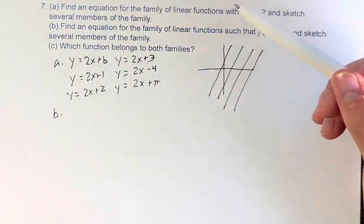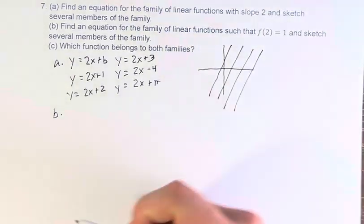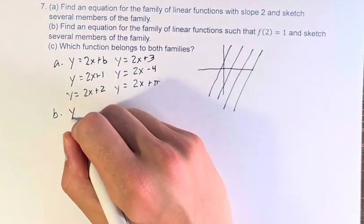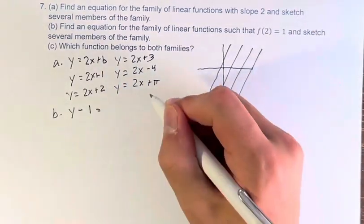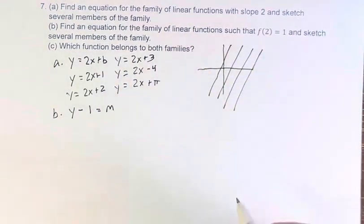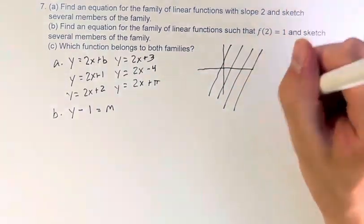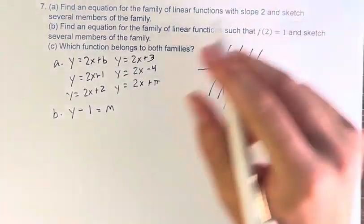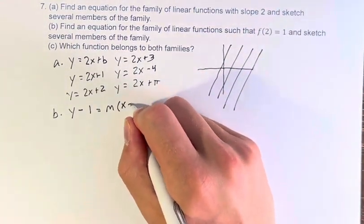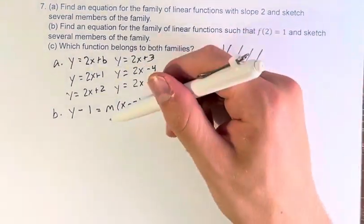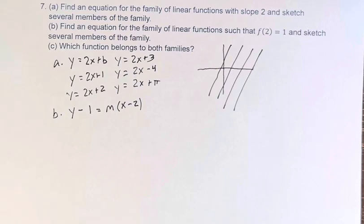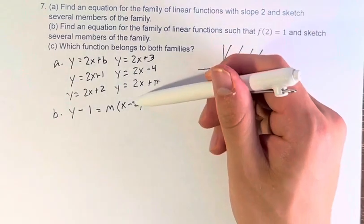So here we're going to use point slope form, which is y minus the y value of this point, 1, is equal to m times x minus the x value of this point, x minus 2. And what differentiates these functions is that m is going to be changing, the slope of these functions are going to be changing, but they all have to go through the point 2, 1.